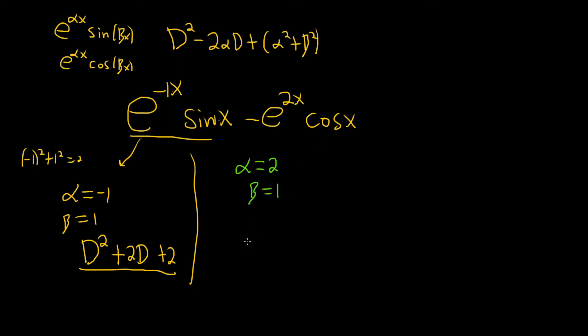So in this case, it would be d squared minus, and then alpha is 2, so 2 times 2 is 4d. Plus, and then plugging it in up here, we'd have 2 squared plus 1 squared, so 5, so plus 5. So this would annihilate this.